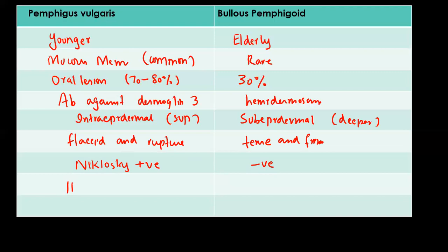Immunofluorescence in Pemphigus Vulgaris will show a net-like IgG pattern, whereas in patients with Bullous Pemphigoid, immunofluorescence will show linear IgG.